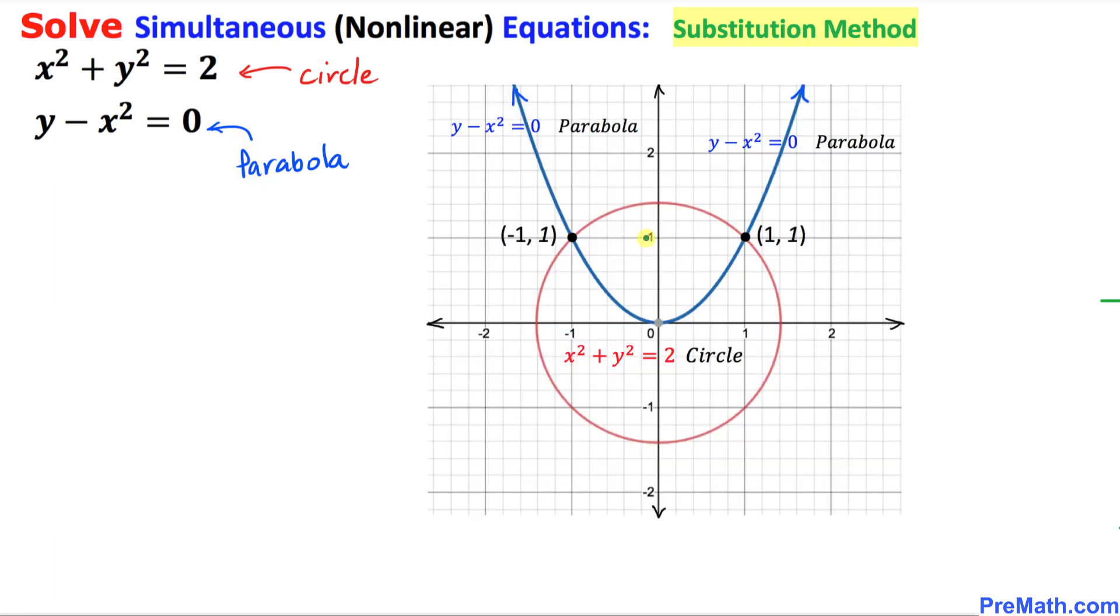And here is their graph. As you can see that the circle is in red while the parabola is in blue. And we can see that both these graphs they intersect at two points.